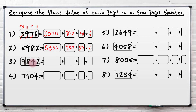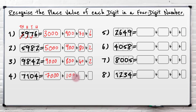So we've got nine thousand eight hundred and forty two. This one: seven thousand one hundred and four. Well, seven thousand. How many hundreds? We've got one hundred. Do we have any tens? No tens. And then four units.